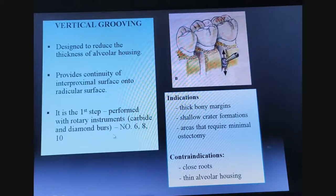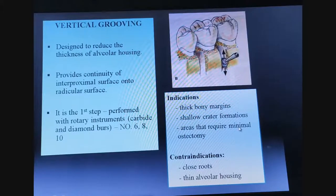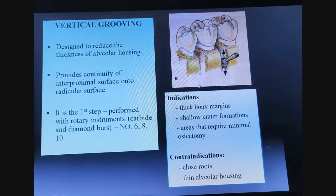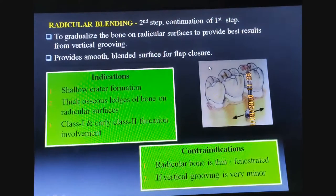Vertical grooving uses carbide and diamond burs and is indicated when there are thick bone margins, shallow crater formation, and areas requiring minimal osteotomy. It is contraindicated when there are close roots or thin alveolar housing.